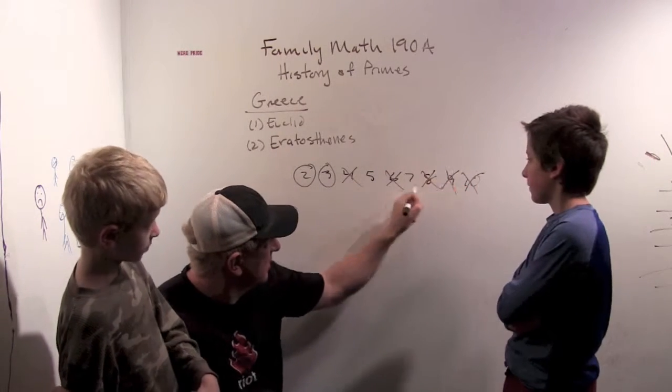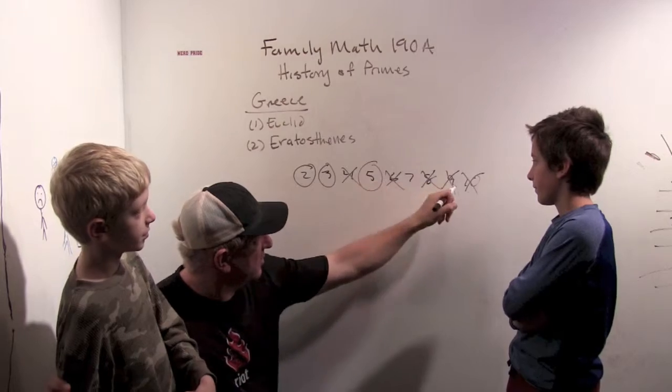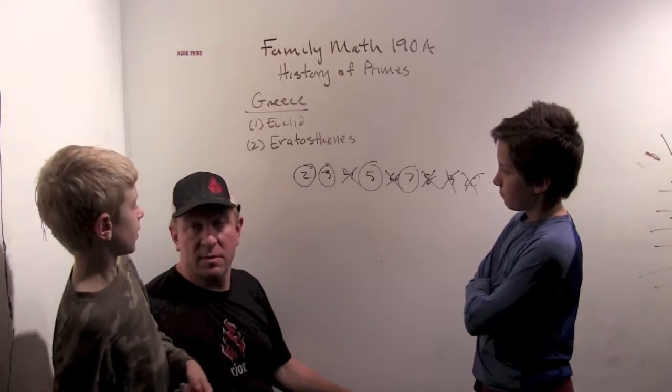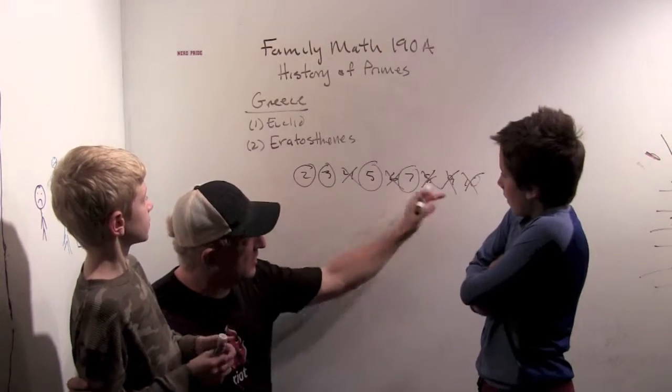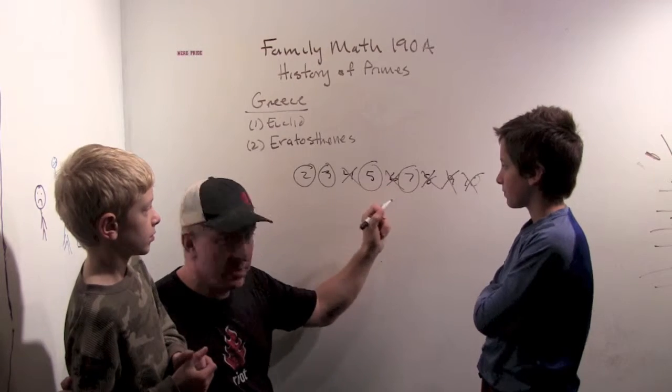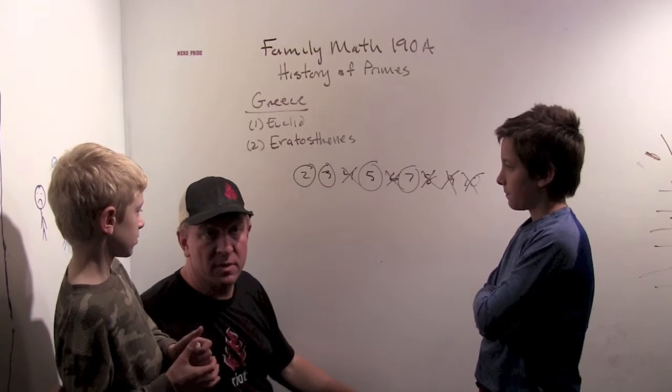Then we just circle the next one and we cross out all the multiples of that number. Nine. Circle. Cross out all the multiples of 5. Circle. So we find some primes: 2, 3, 5, and 7. We can make this list as long as we want. And the numbers that are left circled on the list that are not crossed out are primes.